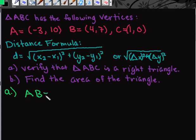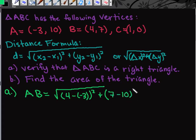You can either use the distance formula, the worked-out example where you look at x₂ minus x₁ and show the work. So I would have (4 - (-3))² plus (7 - 10)².